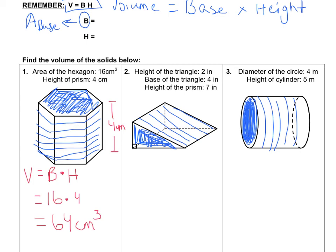In number 2, we're given the height of the triangle as 2 inches, which means this side is 2. The base of the triangle is 4 inches, and the height of the prism is 7 inches. To figure this out, we first need to find the area of the base, which is a triangle.